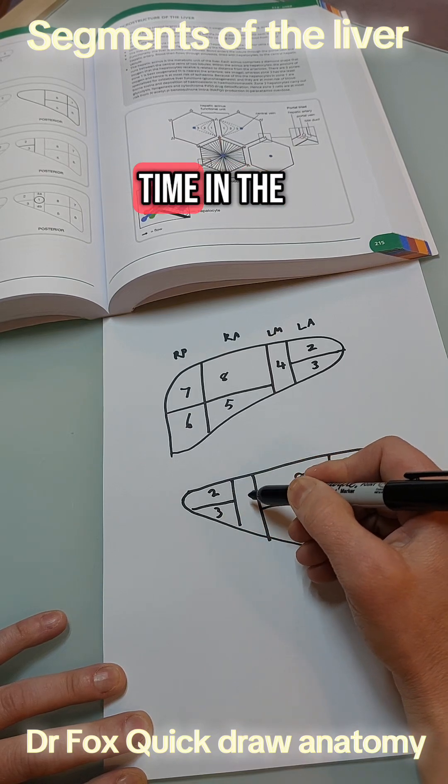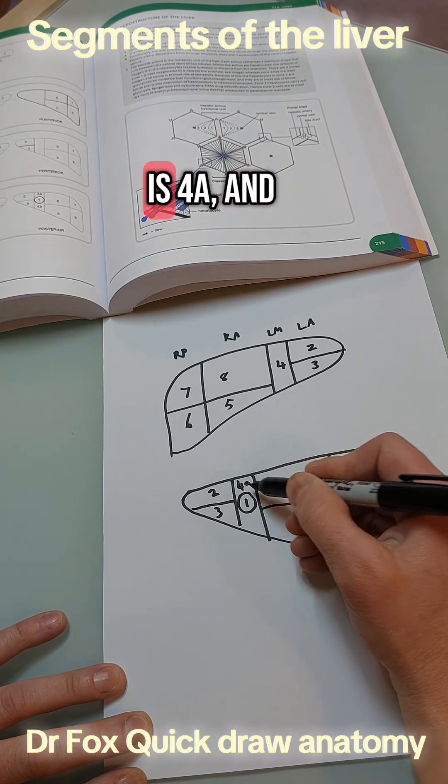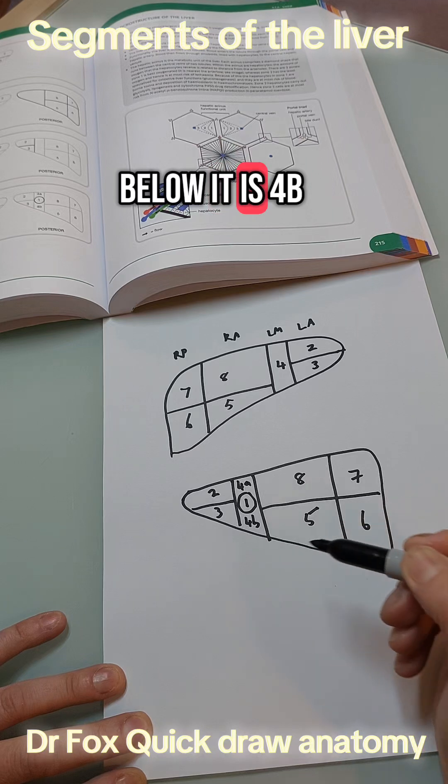three and then this time in the section four you draw a circle and you put segment one and above it is 4a and below it is 4b.